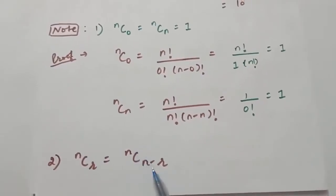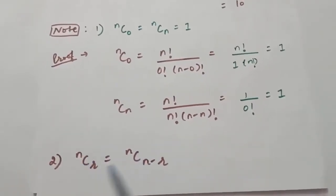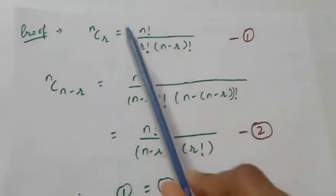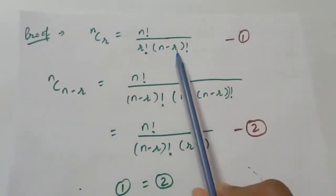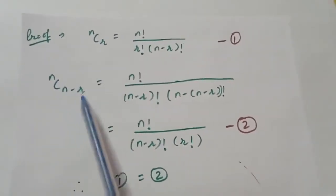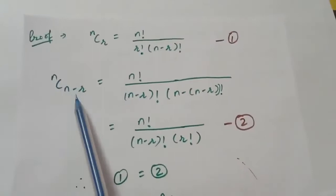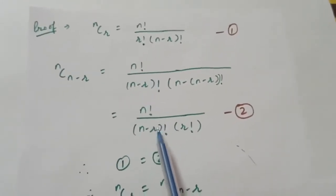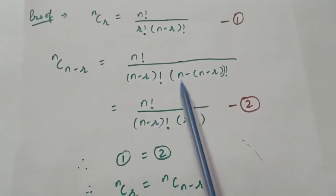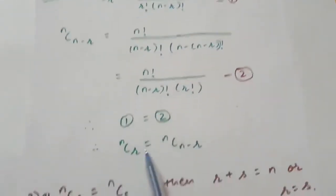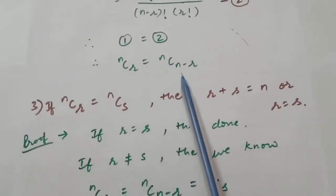The second property is that nCr = nC(n−r). We already know nCr = n! / (r! × (n−r)!). Now nC(n−r) = n! / ((n−r)! × (n−(n−r))!) = n! / ((n−r)! × r!). From both expressions we can see they are equal, therefore nCr = nC(n−r).